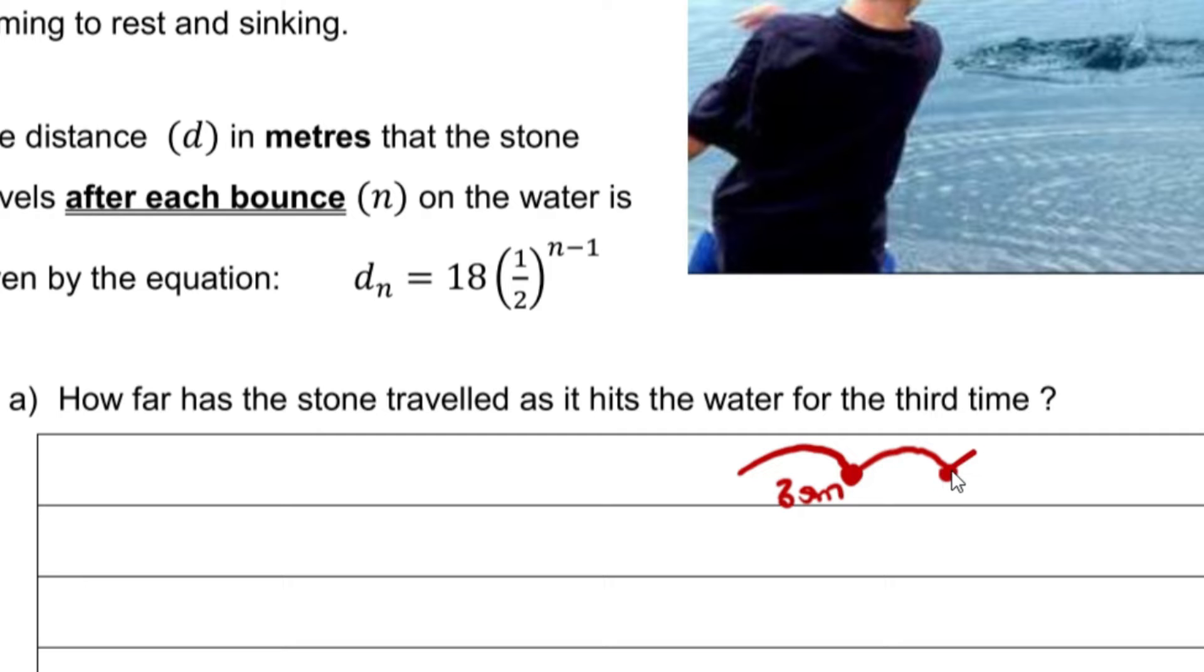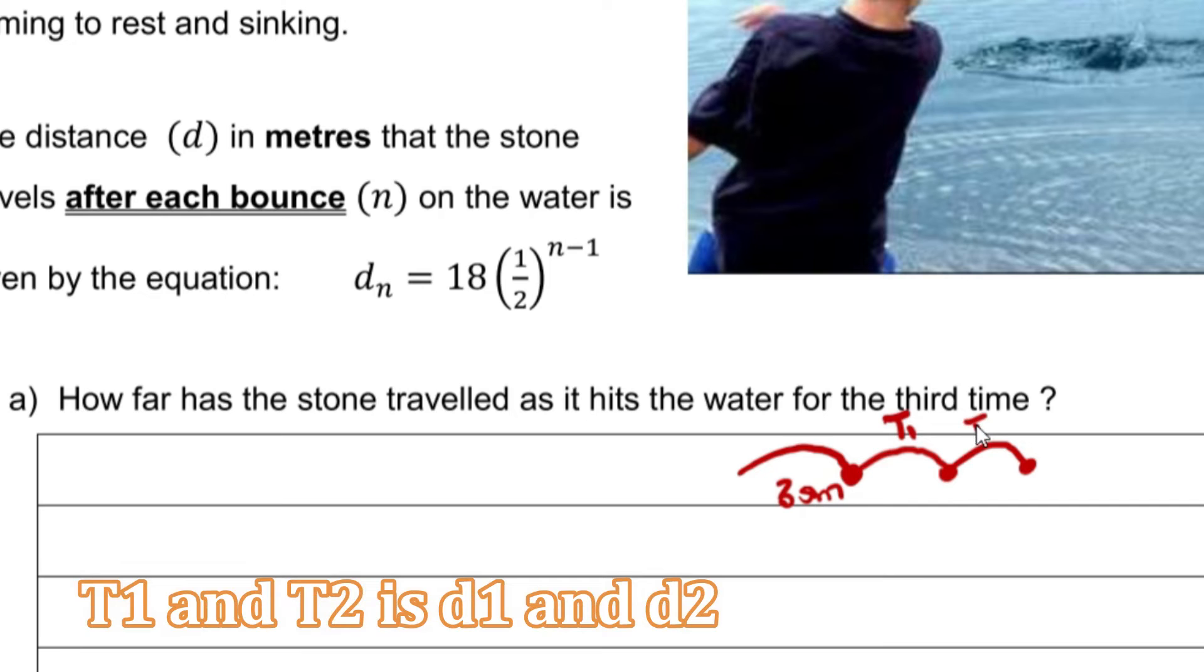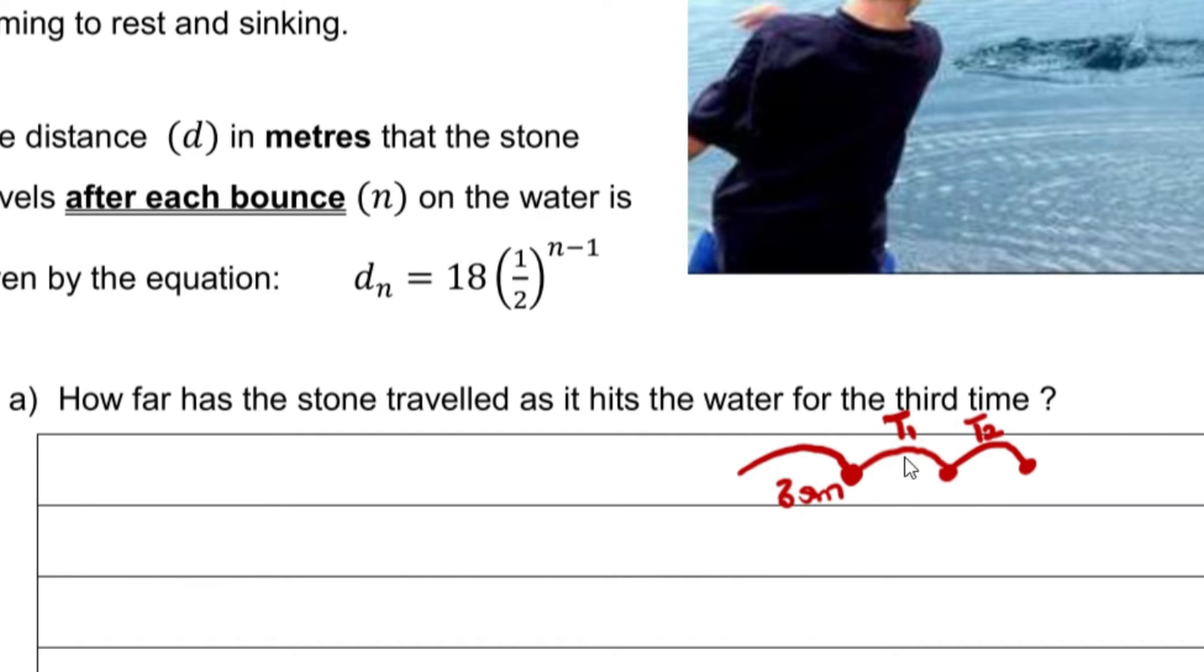Now the top part here is your d_1 and this one here you regard as your d_2. So d represents the distance traveled after each bounce. Since this is the first bounce, this distance here is your d_1, and the second bounce, this distance after the second bounce is your d_2.